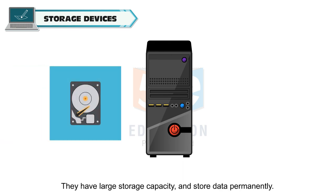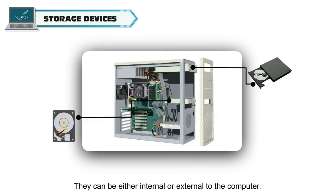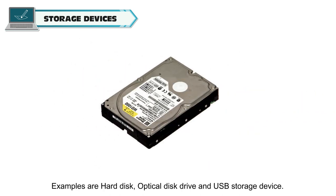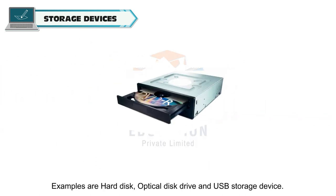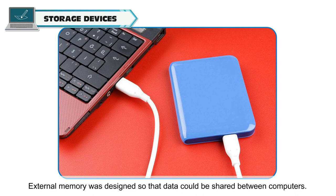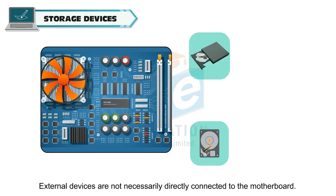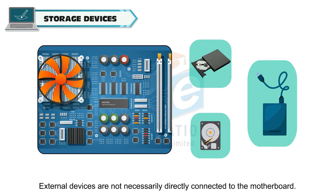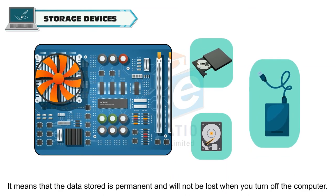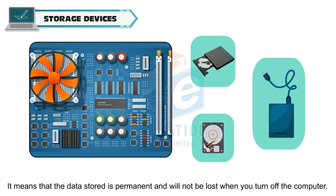Secondary storage devices. They have large storage capacity and store data permanently. They can be either internal or external to the computer. Examples are hard disk, optical disk drive and USB storage device. External memory was designed so that data could be shared between computers. External devices are not necessarily directly connected to the motherboard. They are non-volatile, meaning that the data stored is permanent and will not be lost when you turn off the computer.